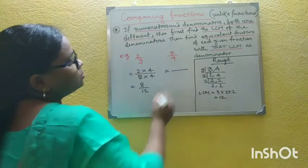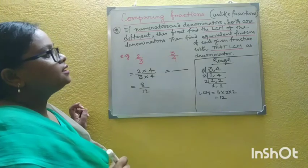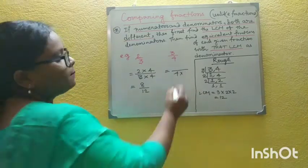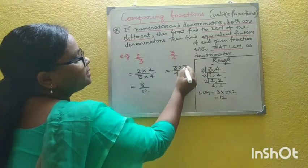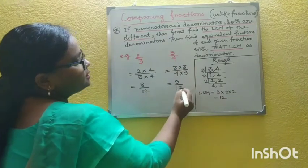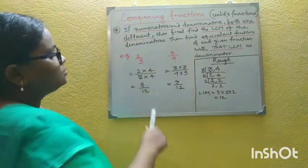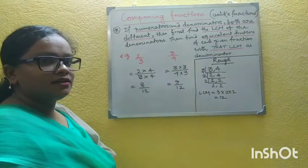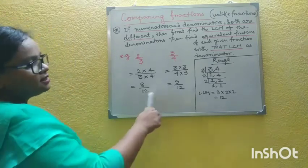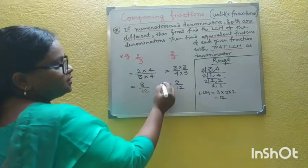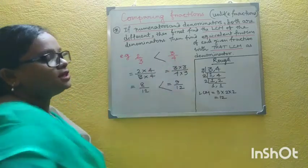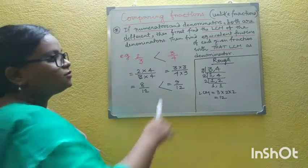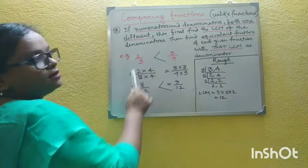Similarly, to find the equivalent fraction of 3/4 with denominator 12, multiply both numerator and denominator by 3, giving 9/12. Now these two fractions are like fractions. The greater numerator gives the greater fraction. So 9/12 is greater, which means 3/4 is the greater fraction, because the equivalent fraction of 3/4 is greater than the equivalent fraction of 2/3.